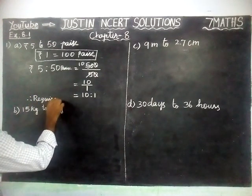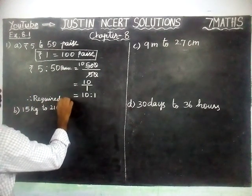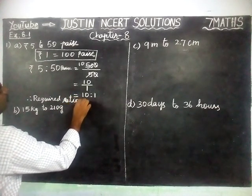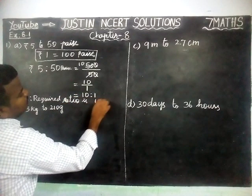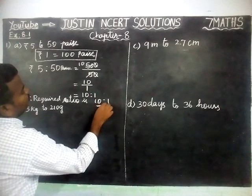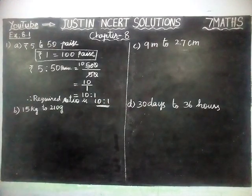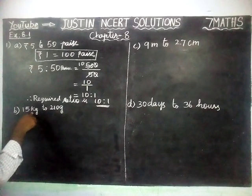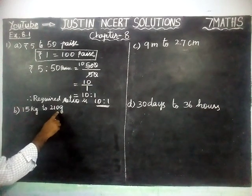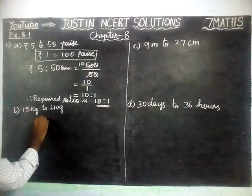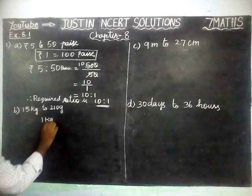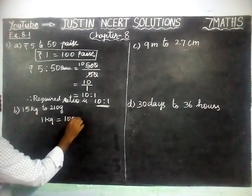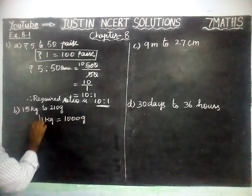Therefore, the required ratio is 10 is to 1. Next, Part B: 15 kilogram to 210 gram. Here also, one quantity is in kilogram and another is in gram, so we are going to convert.